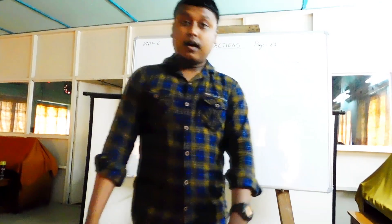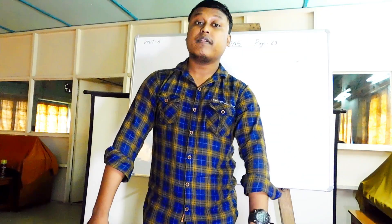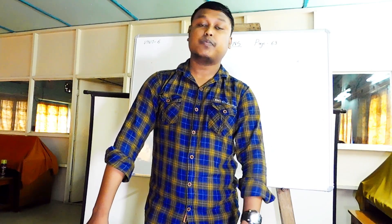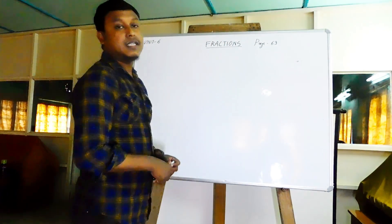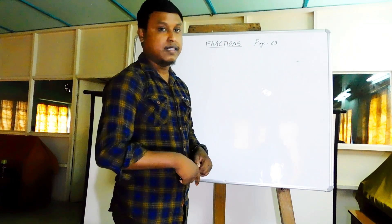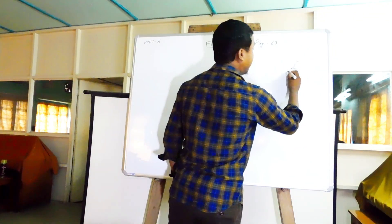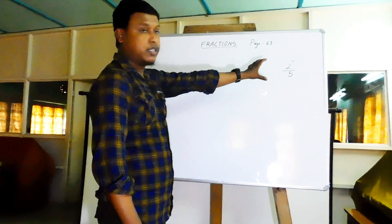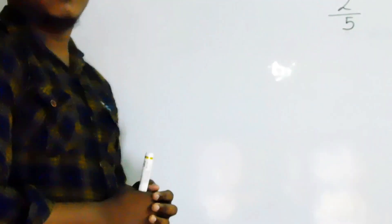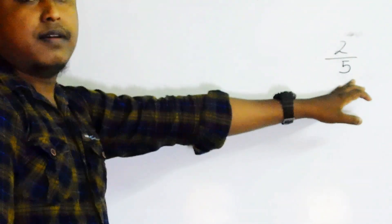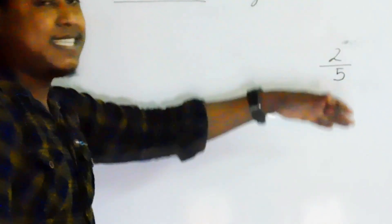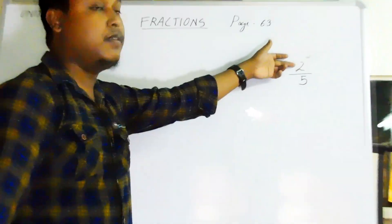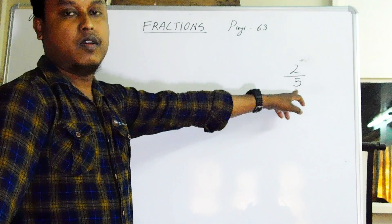Now let's look at question number three: circle the proper fractions. A new term appears — proper fraction. Proper fractions are those fractions whose numerator is less than the denominator. For example, two by five — the upper number is lower than the lower number, meaning the numerator is less than the denominator. Such fractions come under proper fractions.